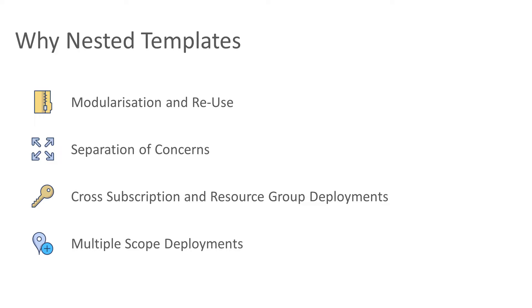For example, if you have a standard way you deploy a SQL server — say you deploy it with a specific configuration, turn on threat detection, create a storage account for storing that threat detection data, enable encryption at rest, and so on — that's what a standard SQL server looks like for your organization. You could create an ARM template that just does that. By using nested templates, you can give that to the rest of the organization and say this is how we deploy a SQL server, and they can import it into their configuration as part of a much larger deployment.